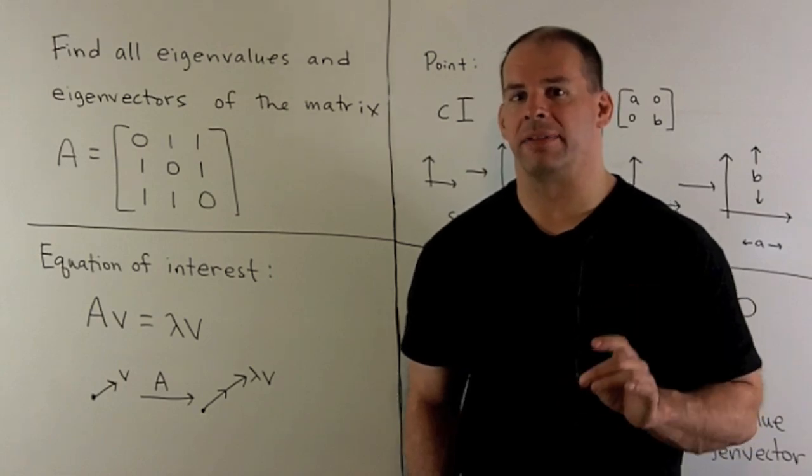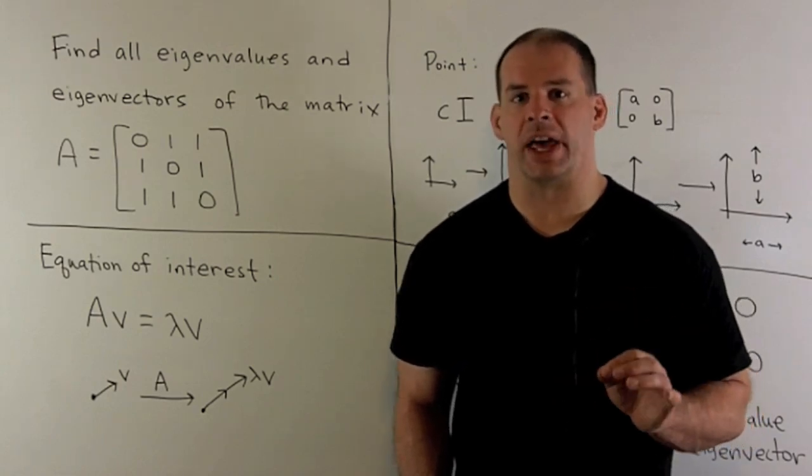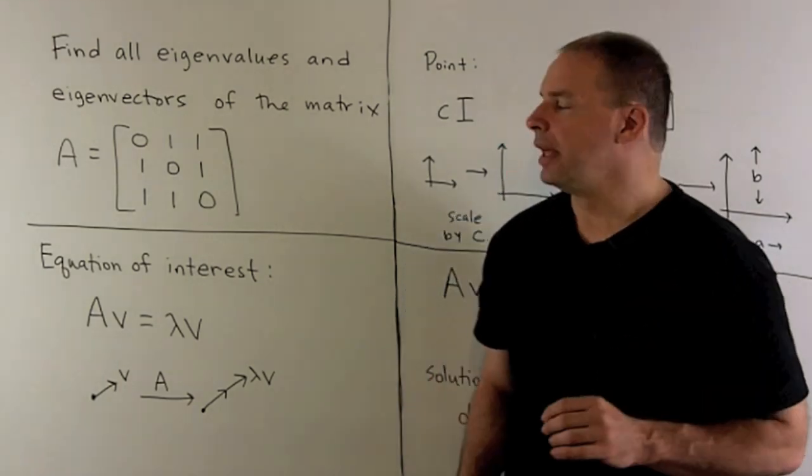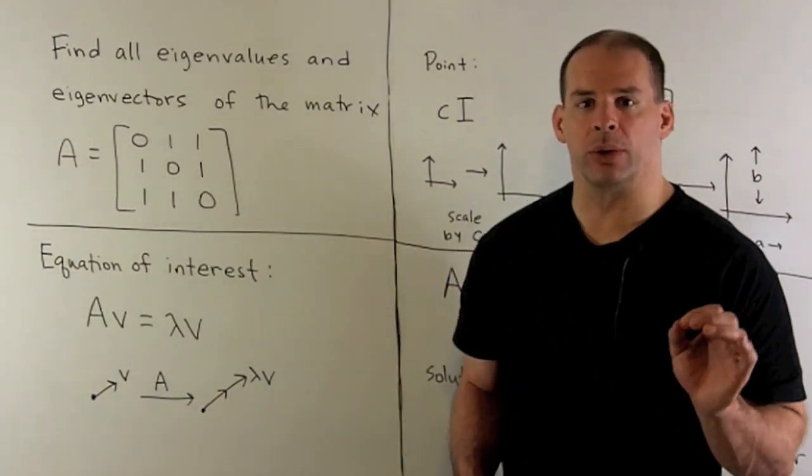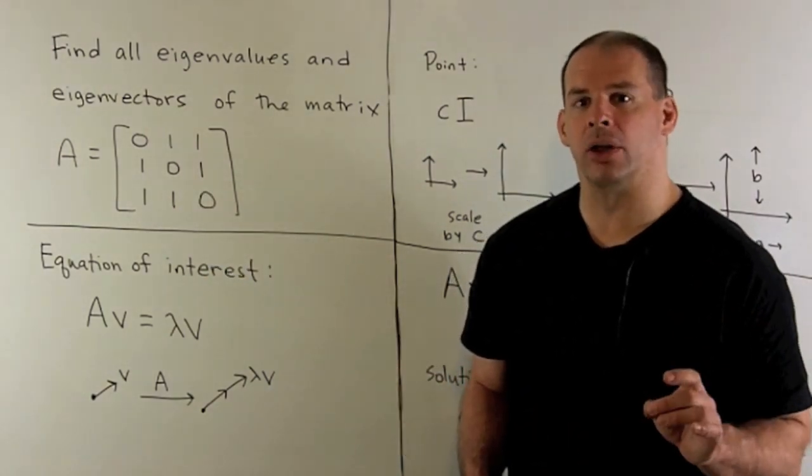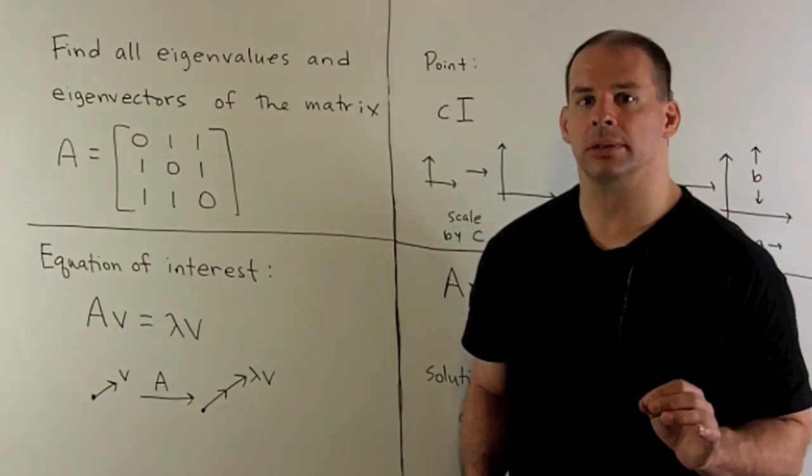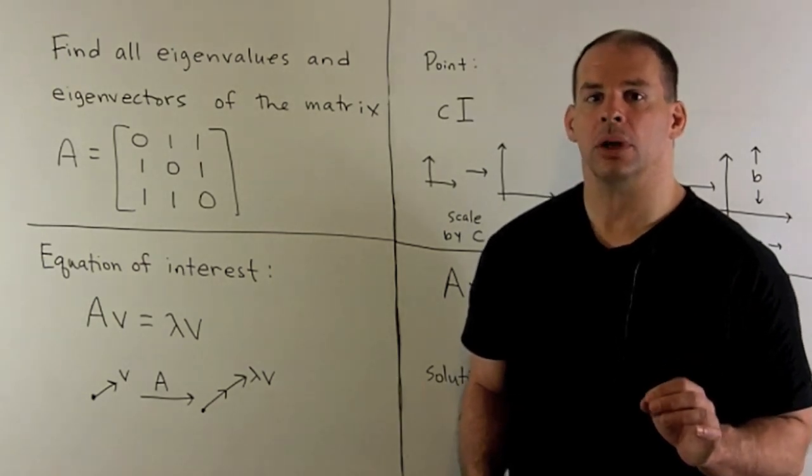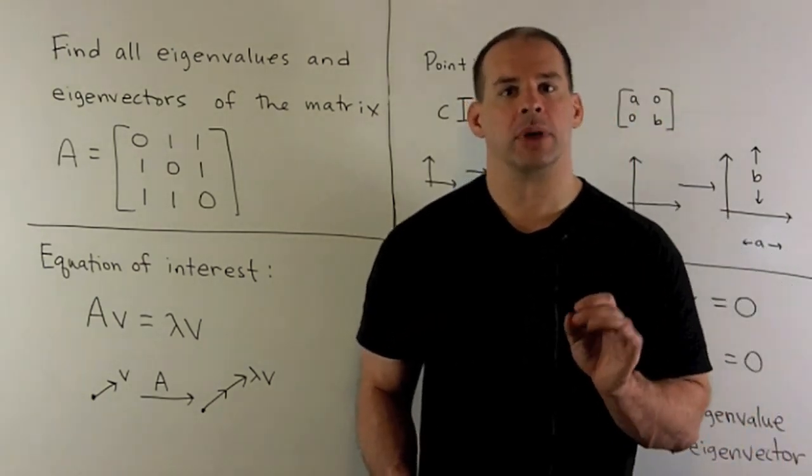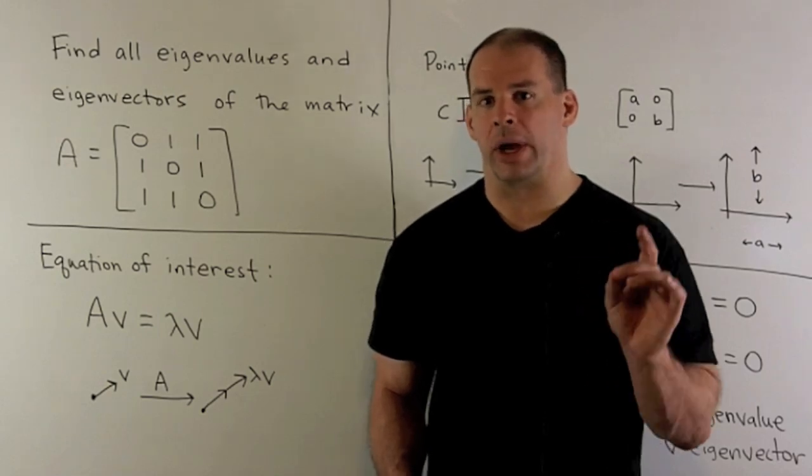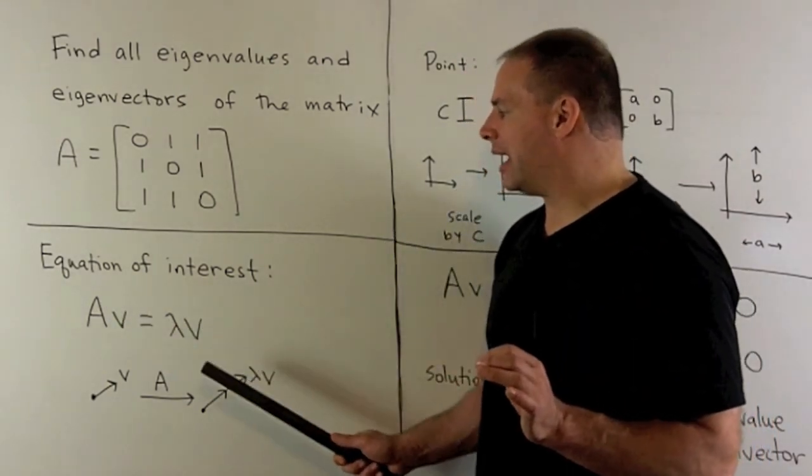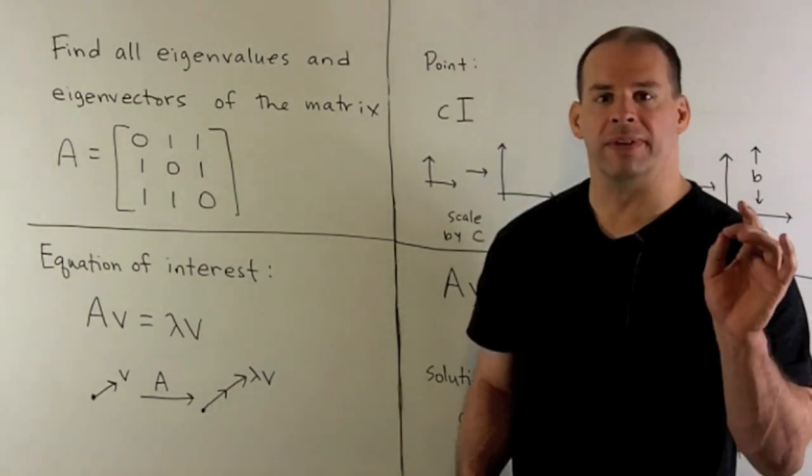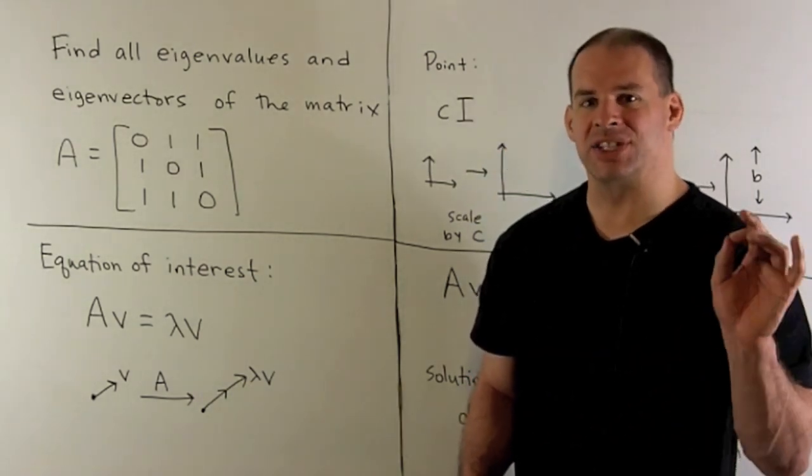Find all eigenvalues and eigenvectors for the following matrix A. A is going to be a 3 by 3 matrix. All entries are equal to 1, except along the diagonal where they're equal to 0. What are we trying to do here? We're trying to find solutions to the equation A times V equals lambda times V, where V is a vector, lambda is a scalar.